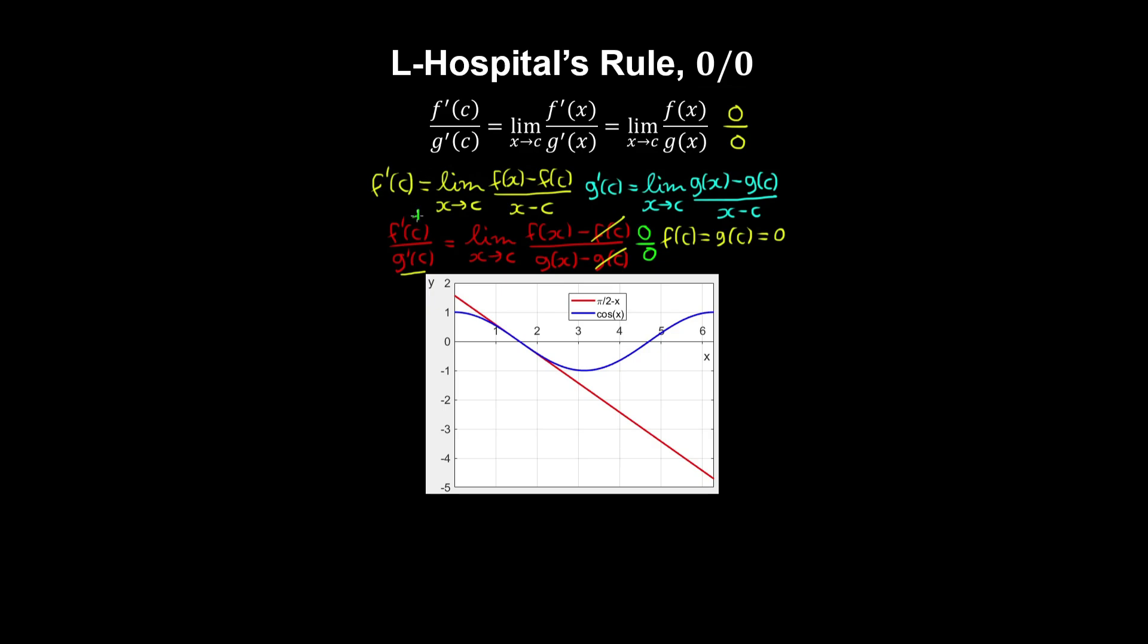And we can also write this ratio of the derivatives at c in the following limit form, so that's basically the same thing. And by L'Hôpital's rule, taking the limit of the functions is the same as taking the limit of the derivatives, where we have the indeterminate form 0 on 0.